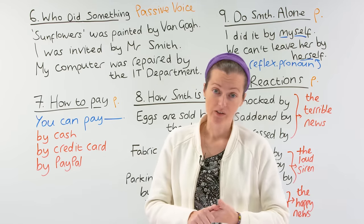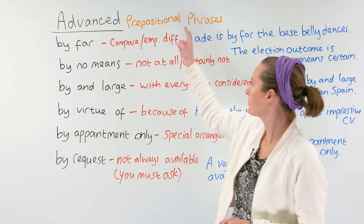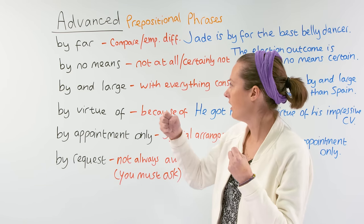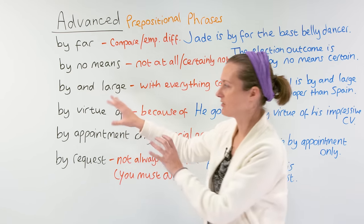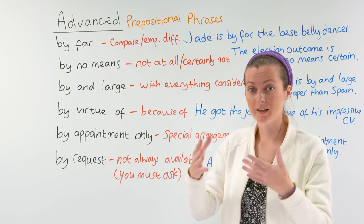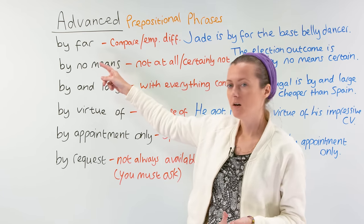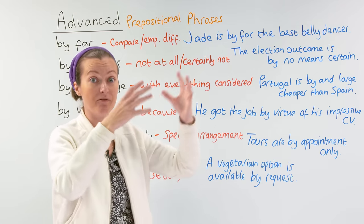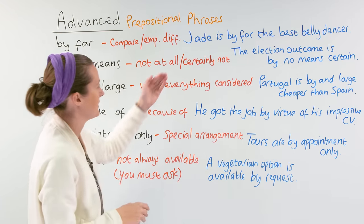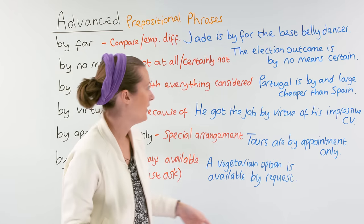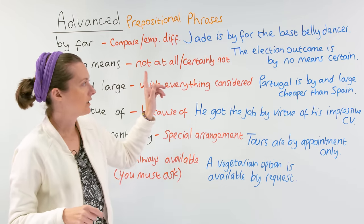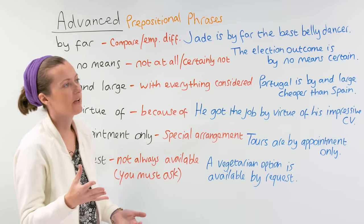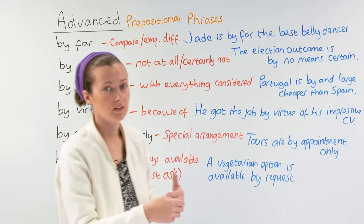Next I have some advanced uses of 'by' — advanced prepositional phrases. Some of these you may not have heard before, or because there are a few small words together, the meanings can be confusing and not clear to guess. 'By far' — we use 'by far' when we want to compare two different things and emphasize the difference between them. Example: 'Jade is by far the best belly dancer.' I can also use 'by far' in a negative sense: 'Toby is the slowest reader in the class by far.'